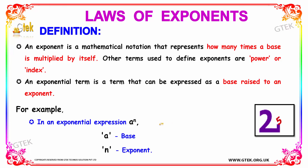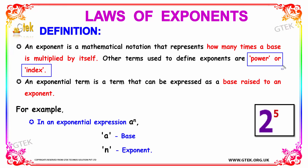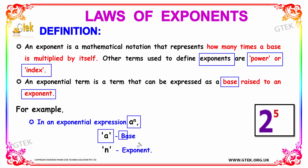Laws of exponents have a definition. An exponent is a mathematical notation that represents how many times a base is going to be multiplied by itself. Other terms used to define exponents are 'power' or 'index'. An exponential term is a term that can be expressed as a base raised to an exponent. For example, a to the power of n — here, a is the base and n is the exponent.